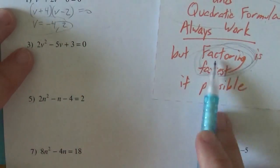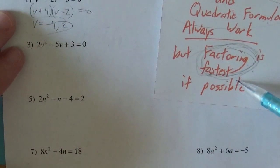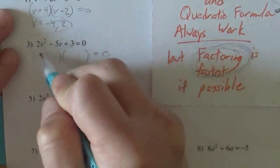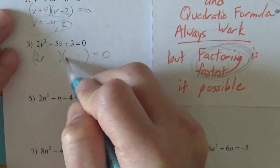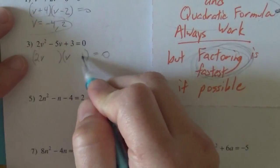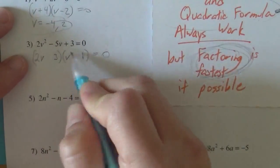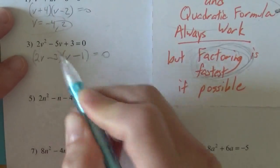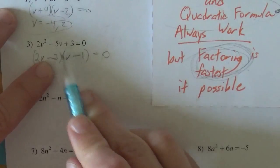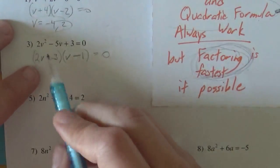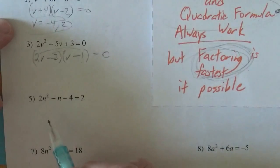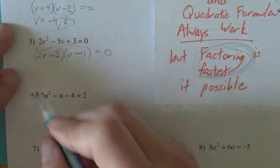First thing I want to do, factoring is always fast when you can, so let's see if this guy factors. So I'm going to rig the 2v² with a 2v and a v, and I'll rig the 3 with a 1 and a 3. So I'm thinking I'll make this a 1 and this a 3, and they both have to be negative in order for the negative 1 times the negative 3 to be a positive 3. And so let's see if this works. This is -2v - 3v is -5v. So this will FOIL out correctly.